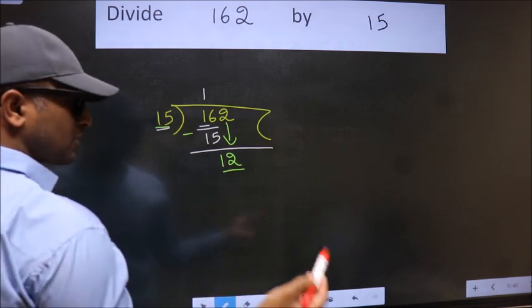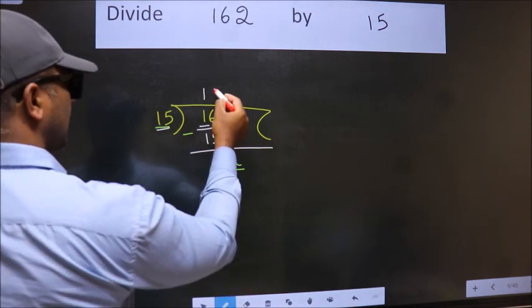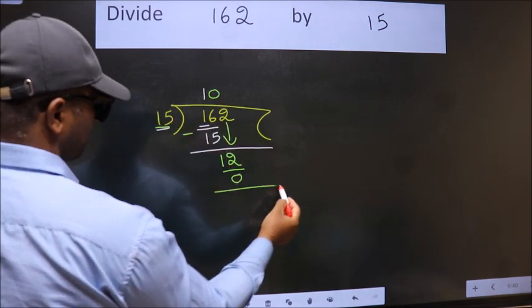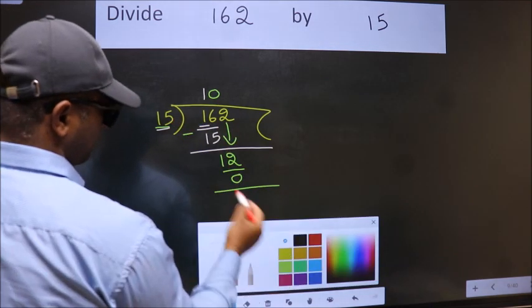So what we do is we take 0 here. So 15 into 0 is 0. Now we subtract, we get 12.